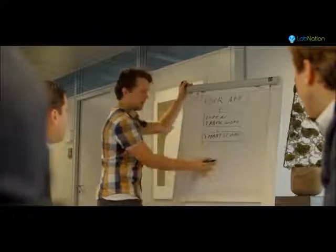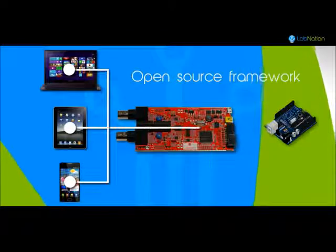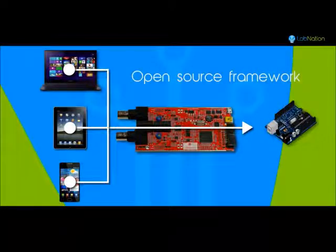The smart scope comes with a full open source framework. This will allow you to control your own hardware creation from your smartphone and PC. Additionally, by providing USB access to the FPGA, the smart scope can kick-start your own FPGA projects.